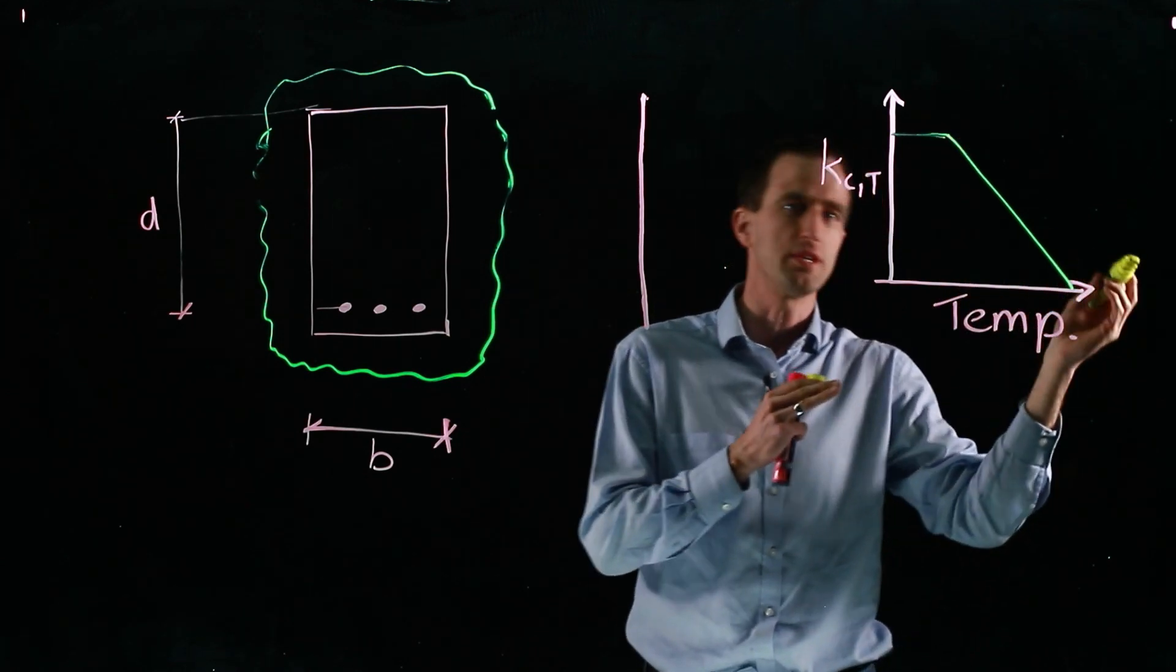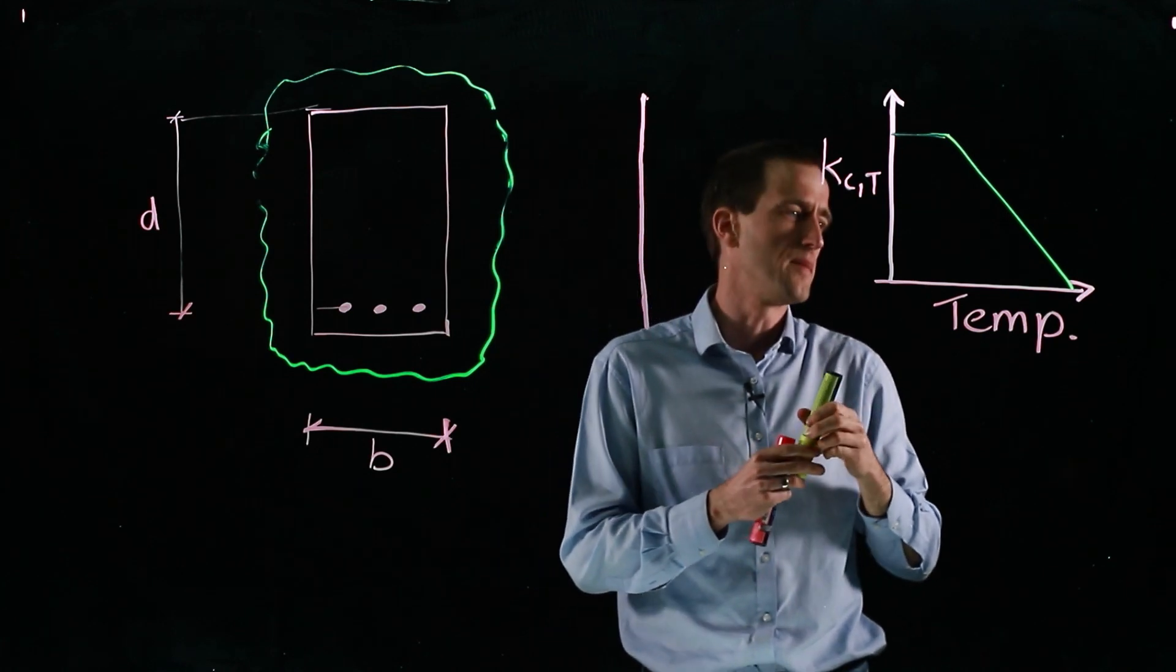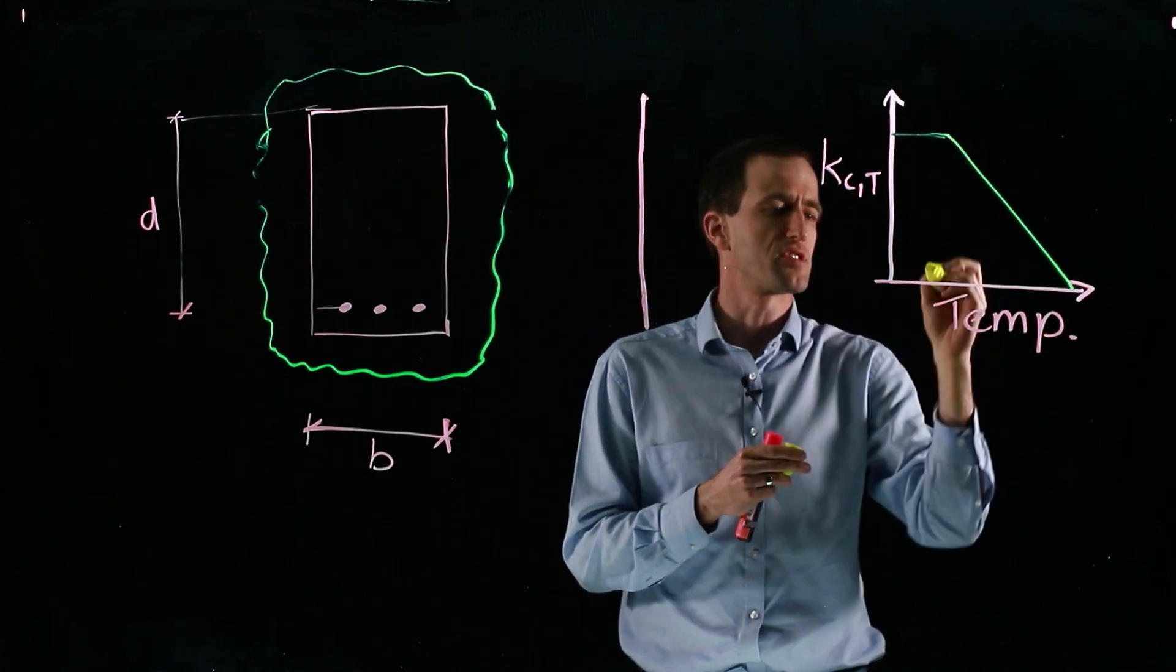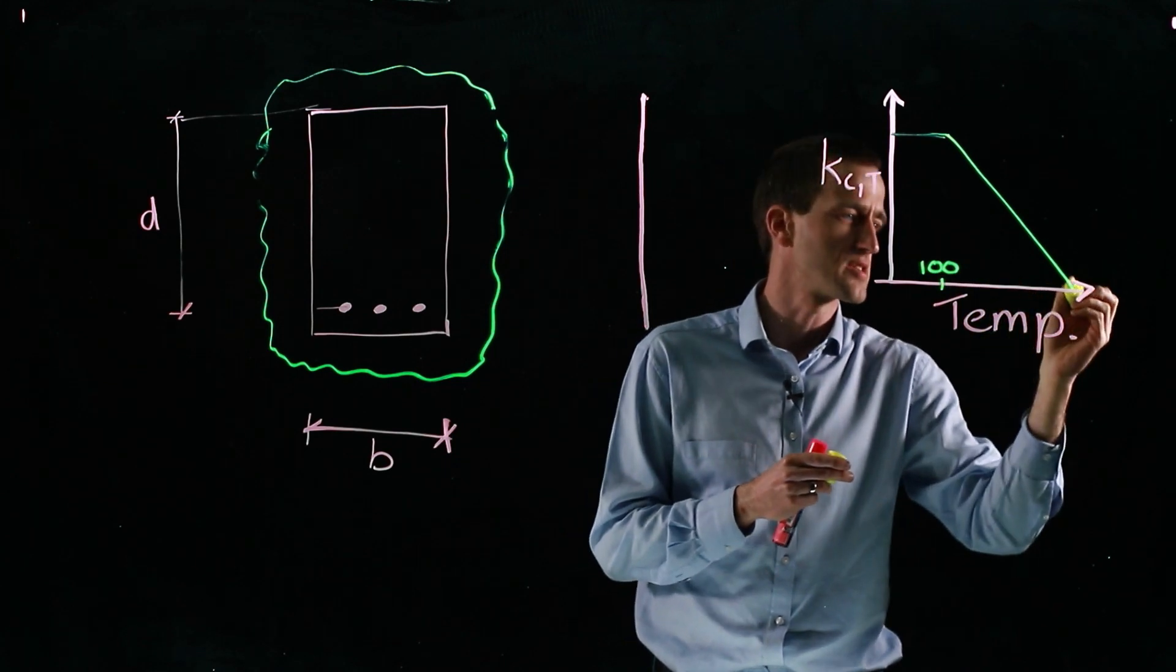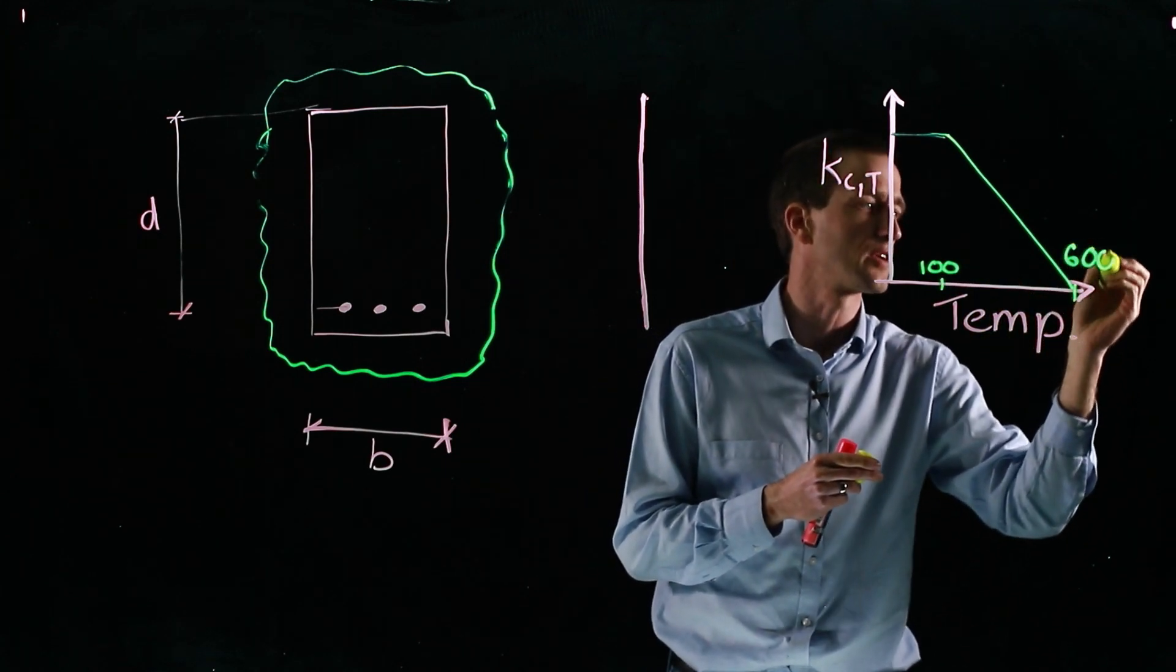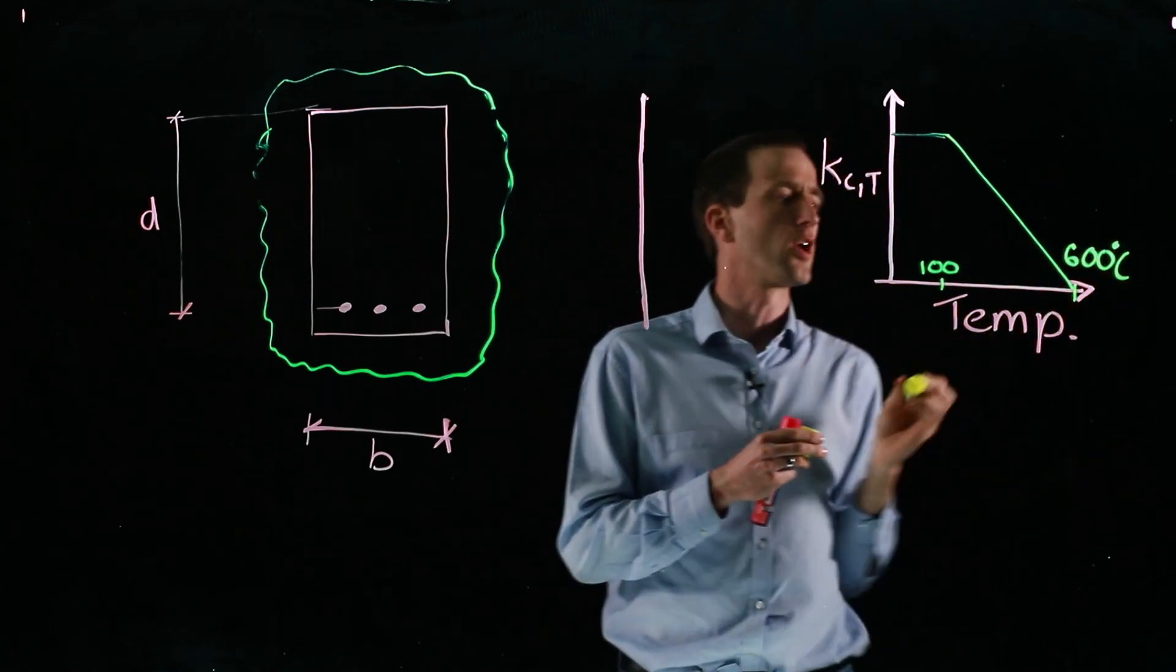And then around 600 degrees or so, you've lost the strength. So this is somewhere around 100 degrees Celsius, and this is somewhere around 600 degrees Celsius, depending on the code you are using.